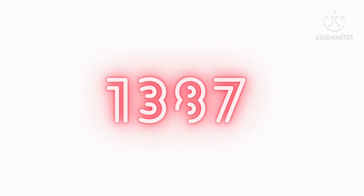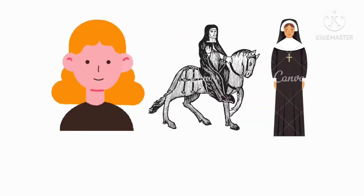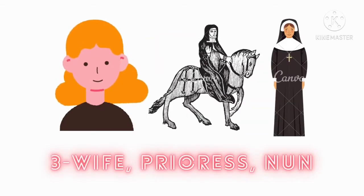Chaucer began to write Canterbury Tales in 1387. How many women characters are there in the prologue? The line 'he was as fresh as the month of May' in the Canterbury Tales refers to the Squire.